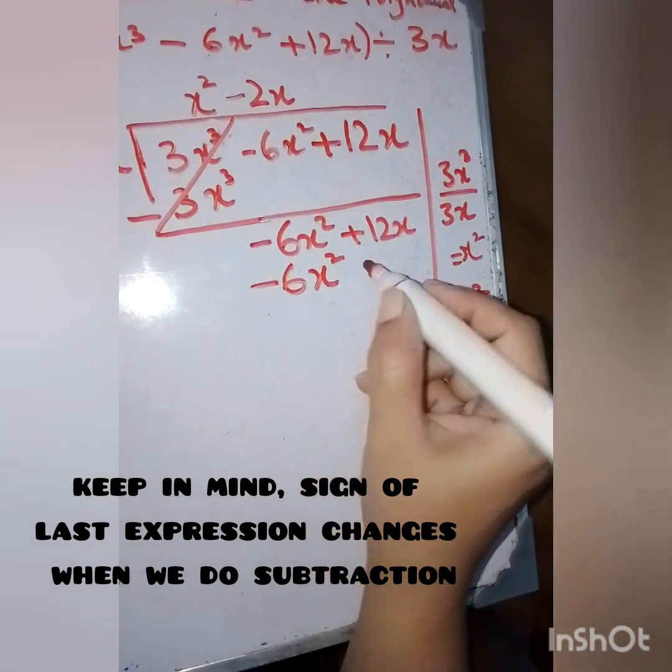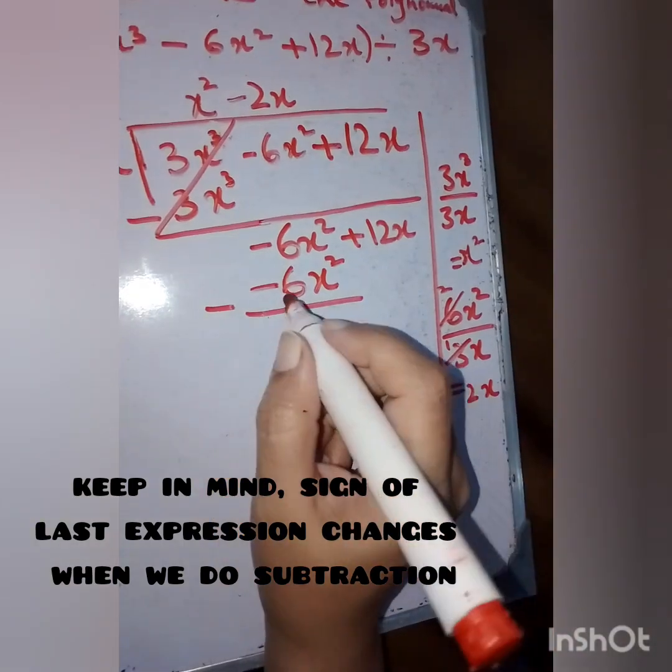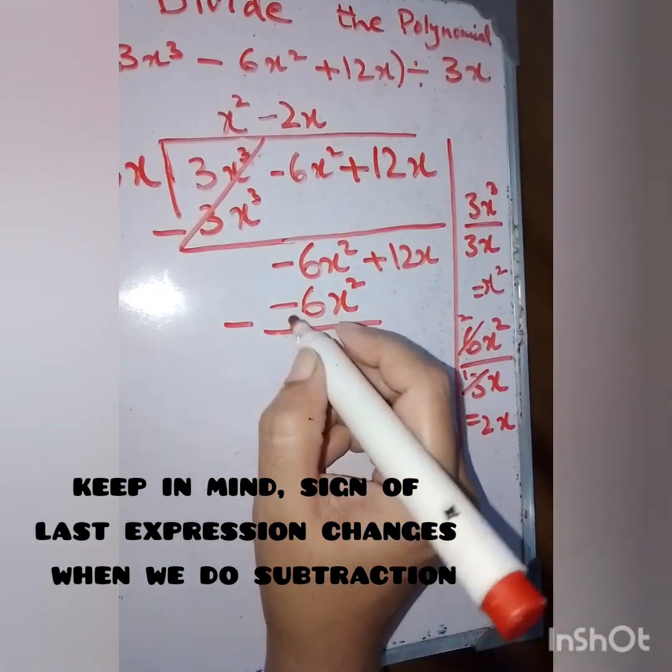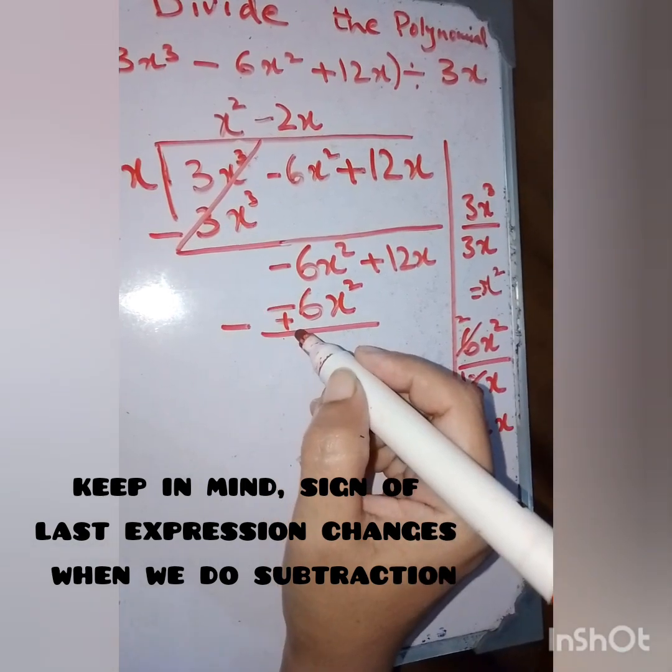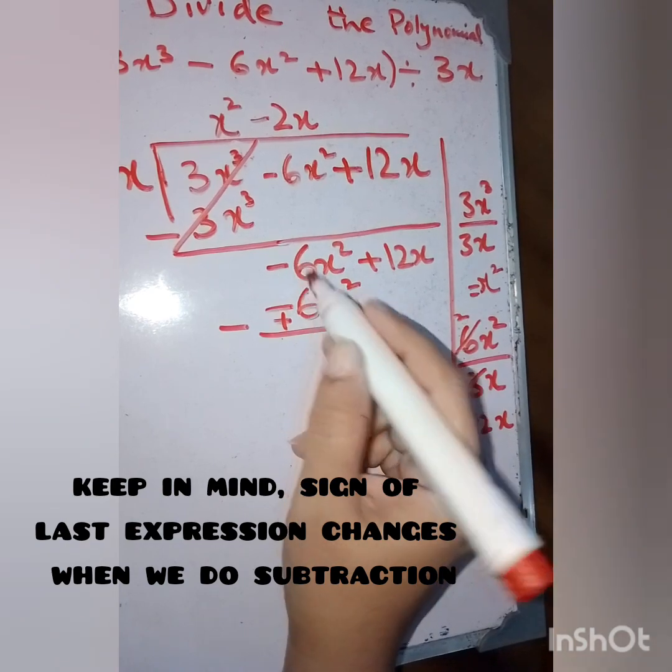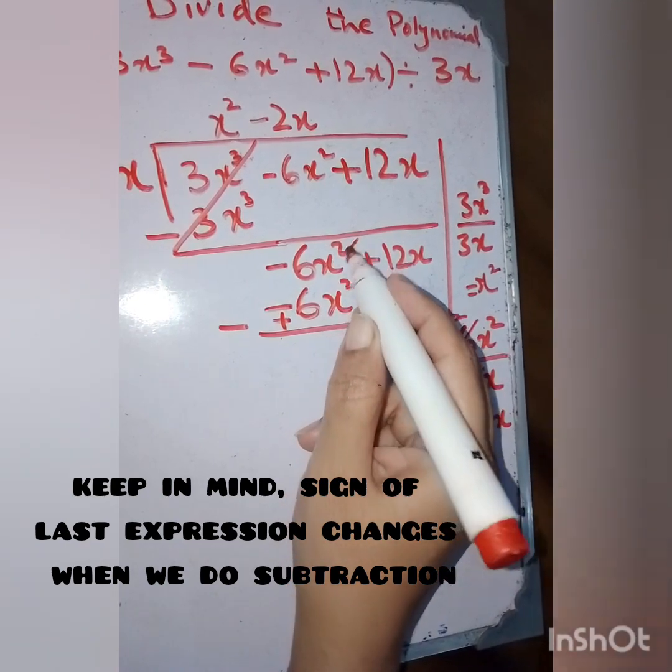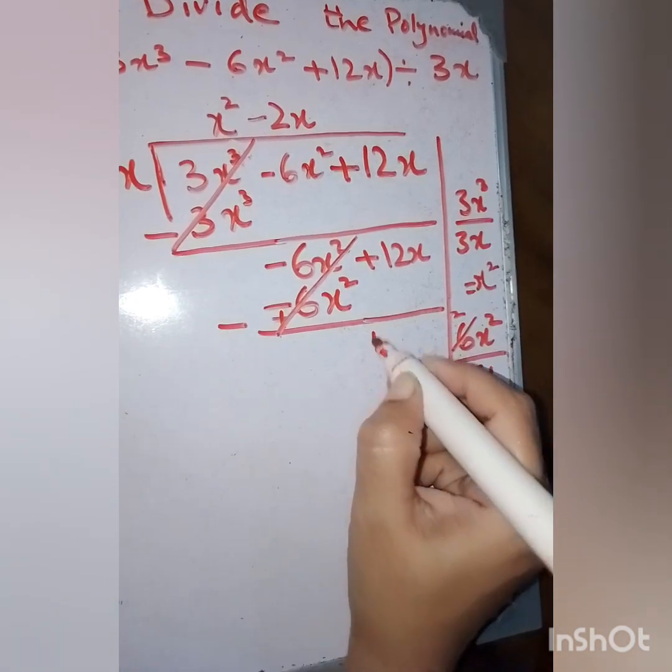On subtracting, we change the sign and it becomes plus. Alternate signs always give you zero: -6 and +6 equals 0. So we drag the last term, which is 12x.